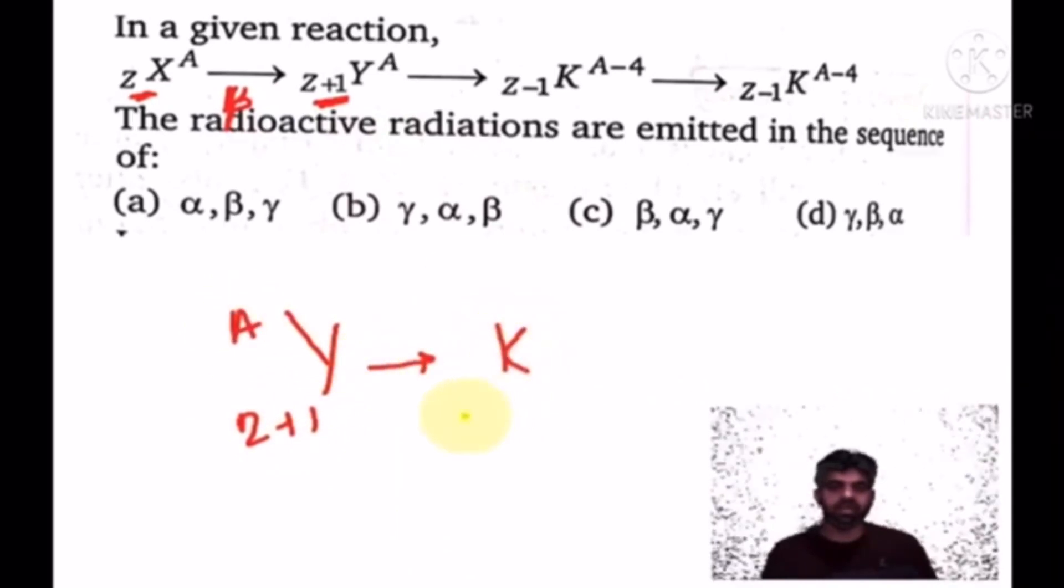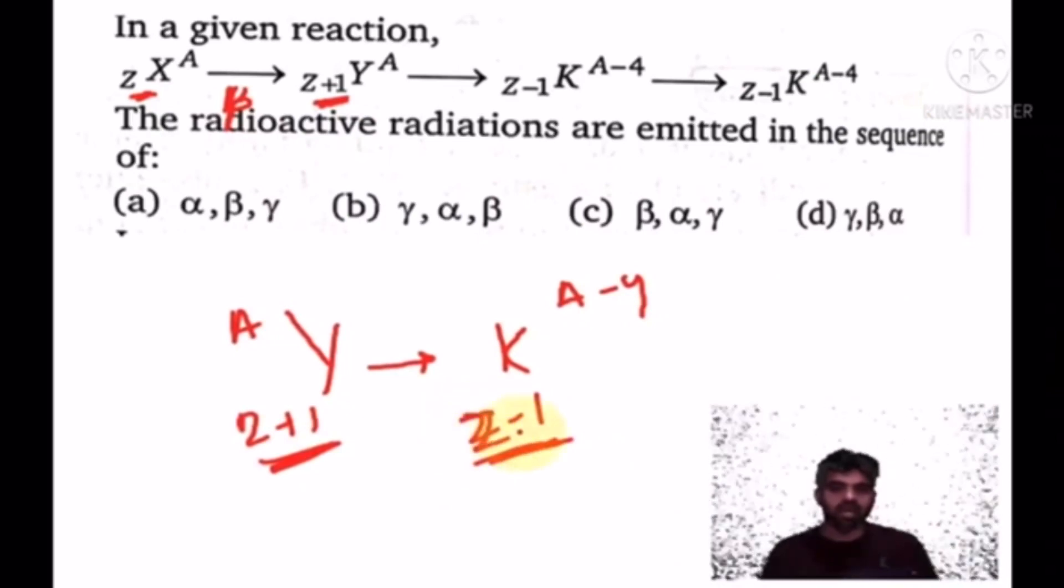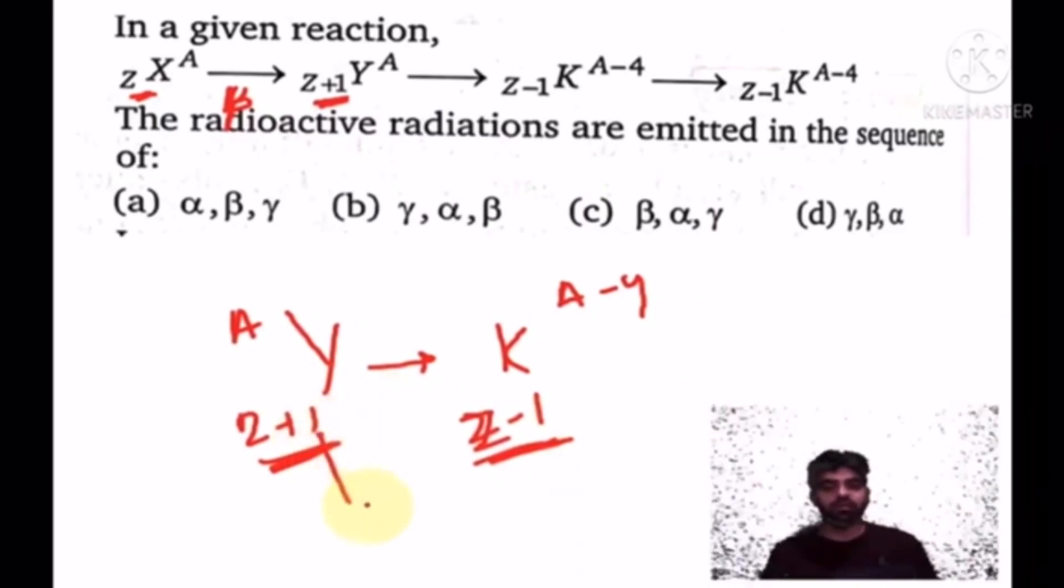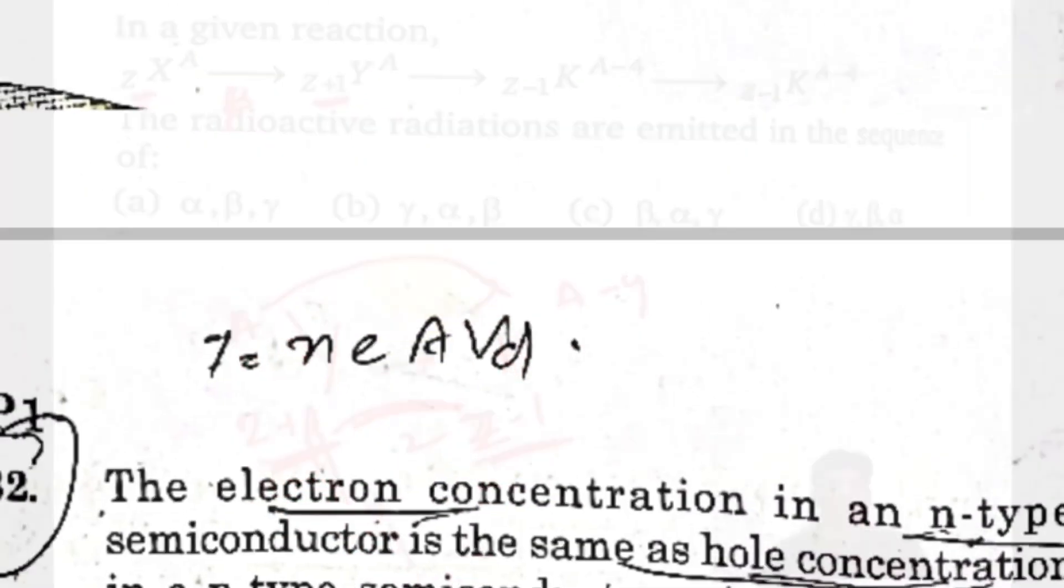Then becomes Z-1, A-4. Atomic number was Z+1, now becomes Z-1. Atomic number decreased by 2 from the plus one. Mass number decreased by 4.